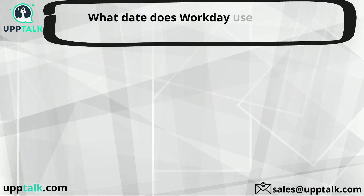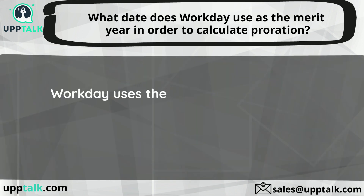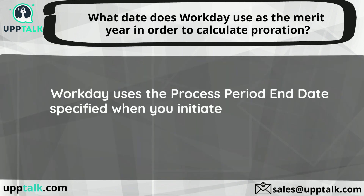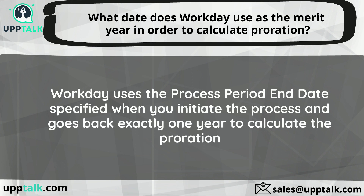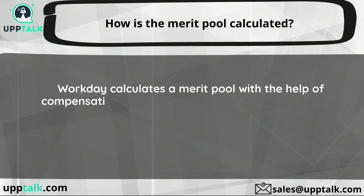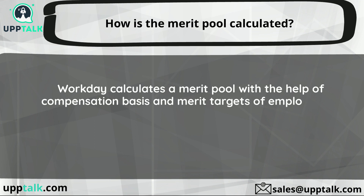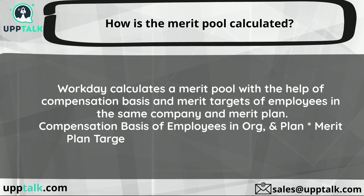What date does Workday use as the merit year to calculate proration? Workday uses the process period end date specified when you initiate the process and goes back exactly one year to calculate the proration. How is the merit pool calculated? Workday calculates a merit pool using the compensation basis and merit targets of employees in the same company and merit plan. Compensation basis of employees in the org and plan, multiplied by merit plan targets, equals the merit pool.